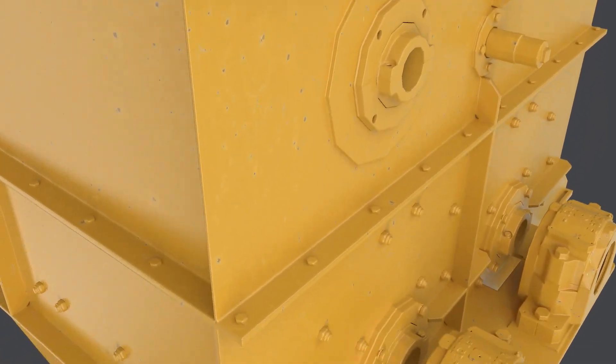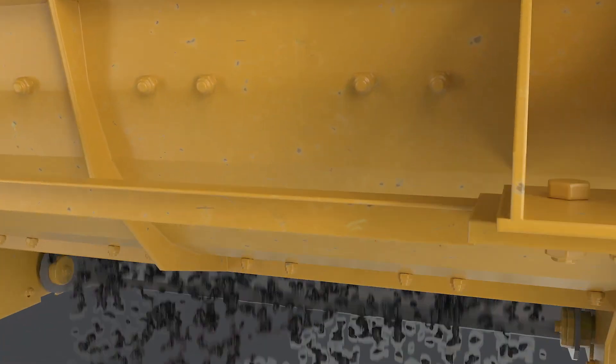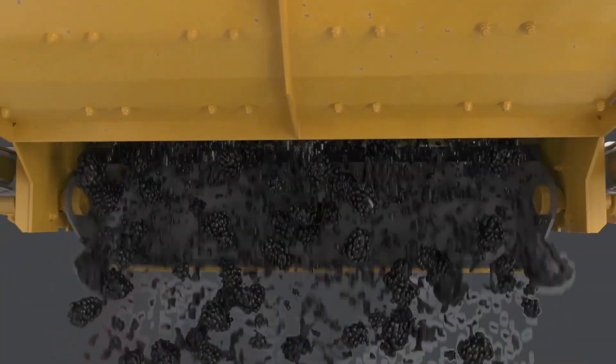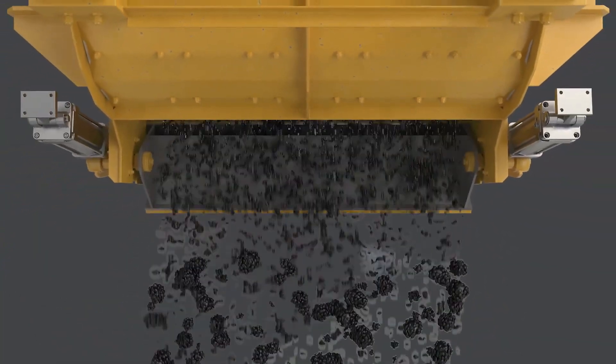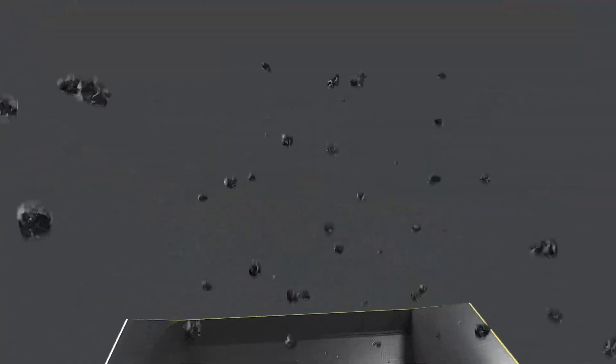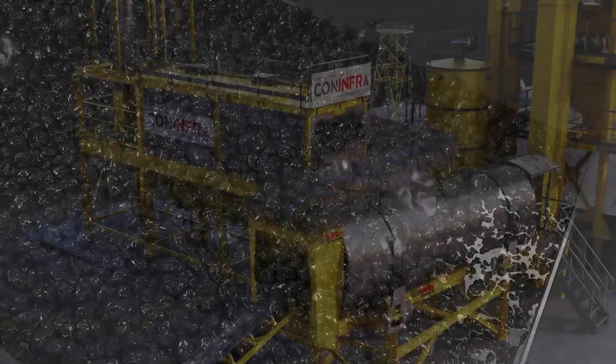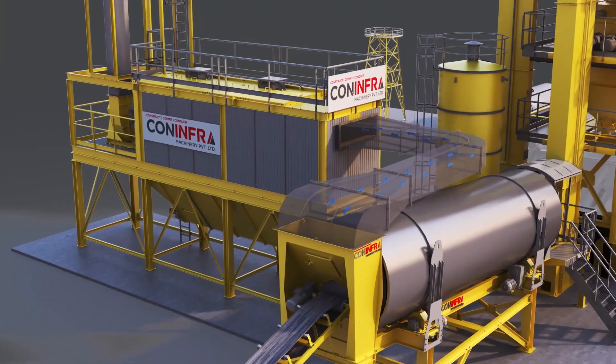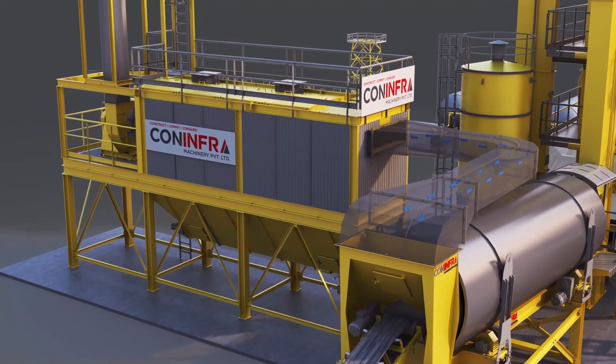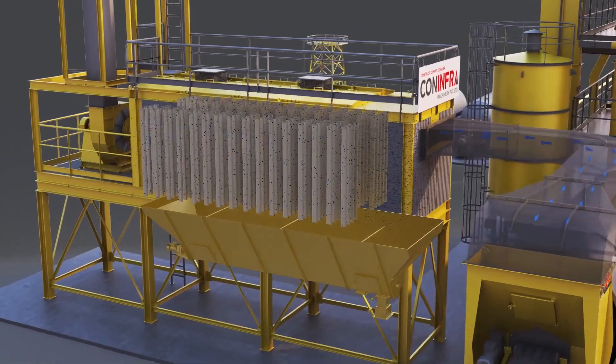The asphalt mixture is now ready to load. A controlled drop leads the mixture into the storage silo. The hot air, along with dust particles, enters the bag house filter.